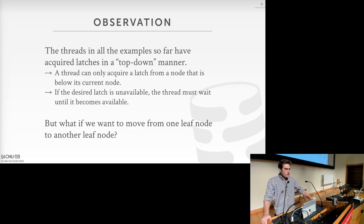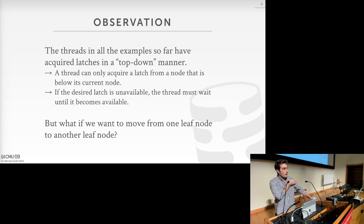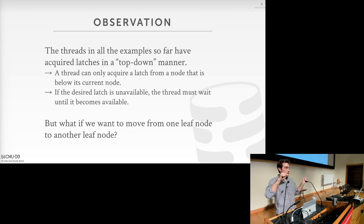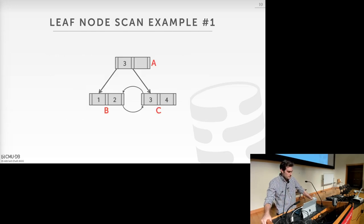Another operation on the B+ tree is the leaf node scan: traverse down to a leaf and then follow sibling pointers across the leaf layer to get a range of values. We have to think carefully about threads acquiring latches top-down versus threads scanning along the leaf node layer — we need to avoid deadlock situations.